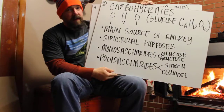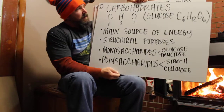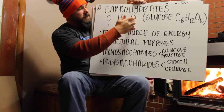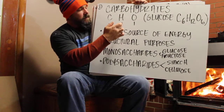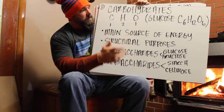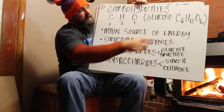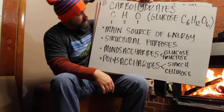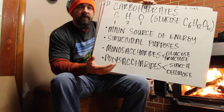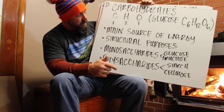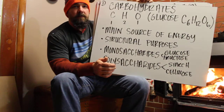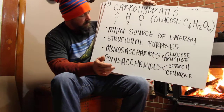The first kind of macromolecule is carbohydrates. Carbohydrates are always in this form — carbon, hydrogen, and oxygen in this ratio. There's always two hydrogens for every one carbon and one oxygen. For example, glucose is C6H12O6. Carbohydrates are the main source of energy for almost every organism on earth, and they also have structural purposes in some animals, but mostly plants — in the cell wall and things like that.